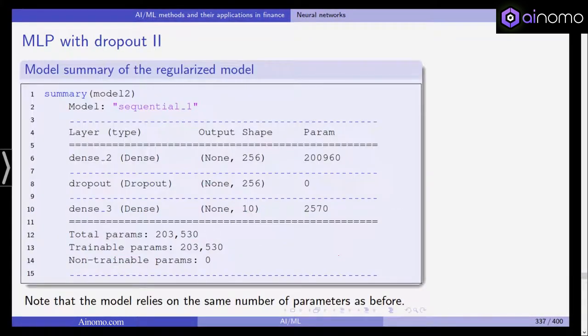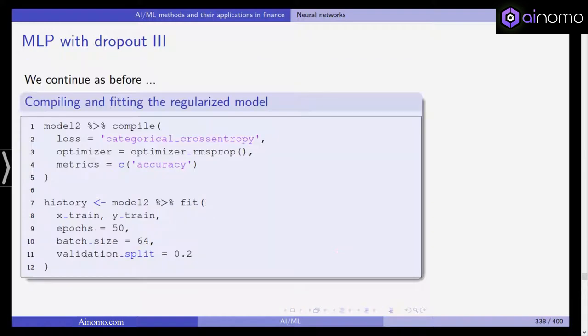This is the summary of our regularized model. Again, it's sequential with those three layers. The dropout layer doesn't have any parameters, so again we get the same number of parameters as before. It's not really about reducing the flexibility of the model, just using maybe different data to fit the model. We compile this and fit the regularized model using cross entropy as loss function.